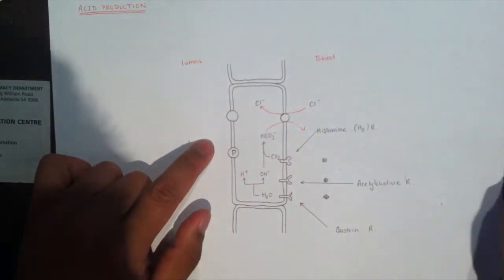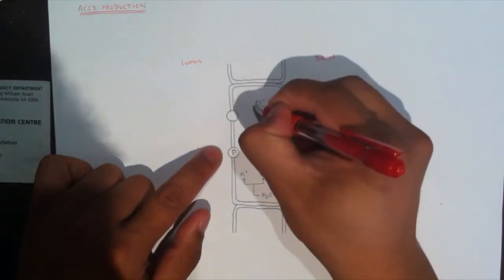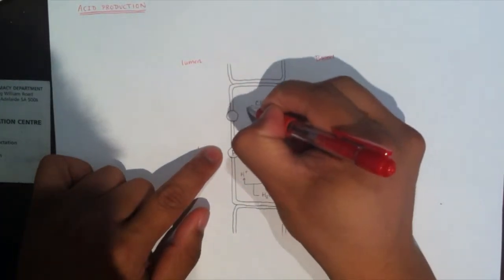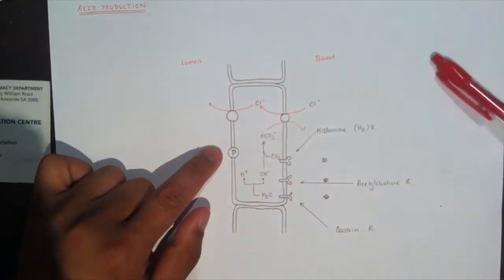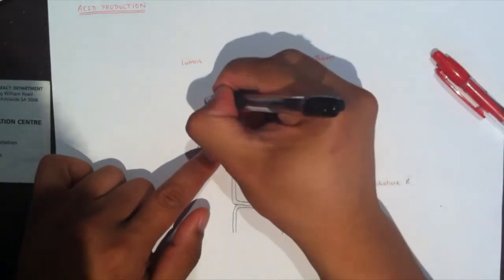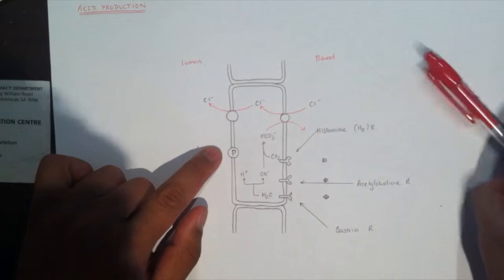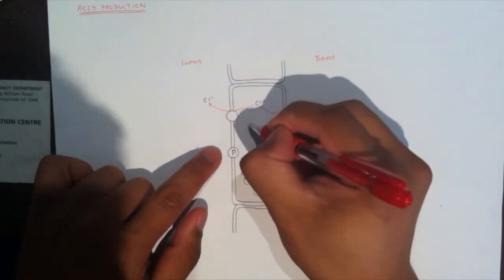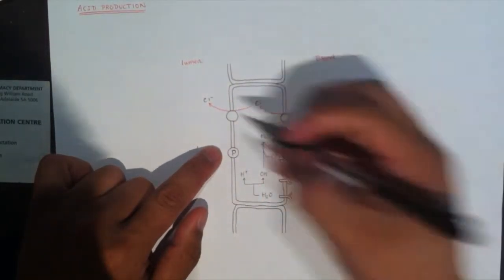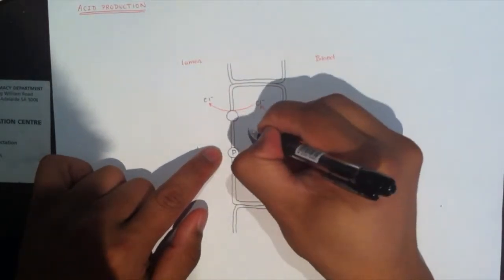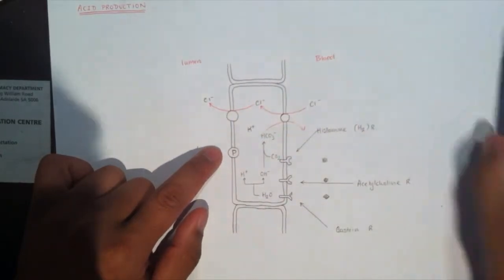After that, the chloride is transported out. This is a cotransporter, so it gets transported out with potassium.